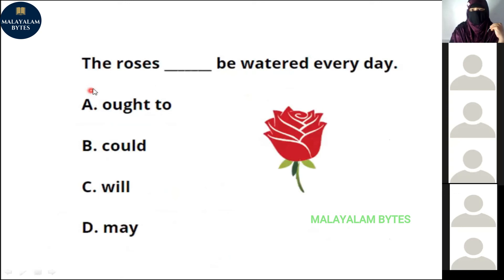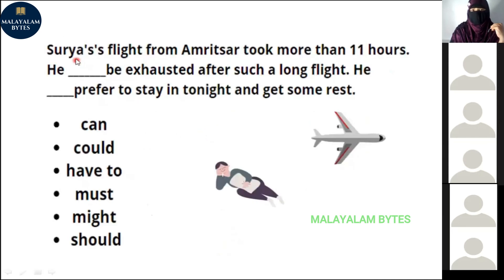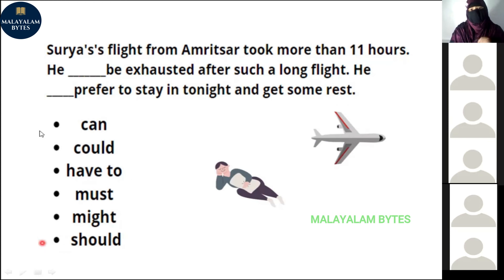Next question: 'The roses be watered every day.' Options: ought to, will. The correct answer is 'ought to be watered every day' — because it is something that is required, an obligation. Next: 'Youngsters obey their parents.' Options: must, may, will. The correct answer is 'must' — 'youngsters must obey their parents' expresses obligation. What modals would you use for the next two sentences about Surya's flight?